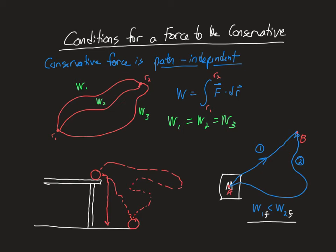From one perspective, path independence is important because it allows us to write that the work is the negative change in the potential energy: W = -ΔU. We can only make that statement for conservative forces, because we don't want to have to declare what the path is when we write ΔU. Delta U only knows about the beginning and the end of the path — it doesn't know anything about how the path is actually traversed. So it is very beneficial for us to know when a force is path independent.